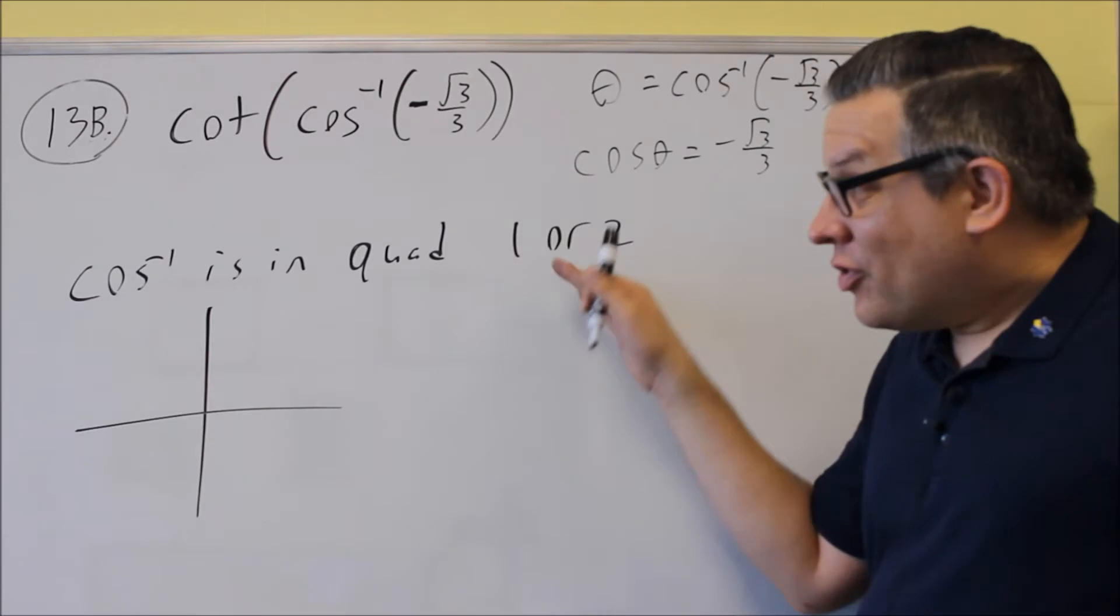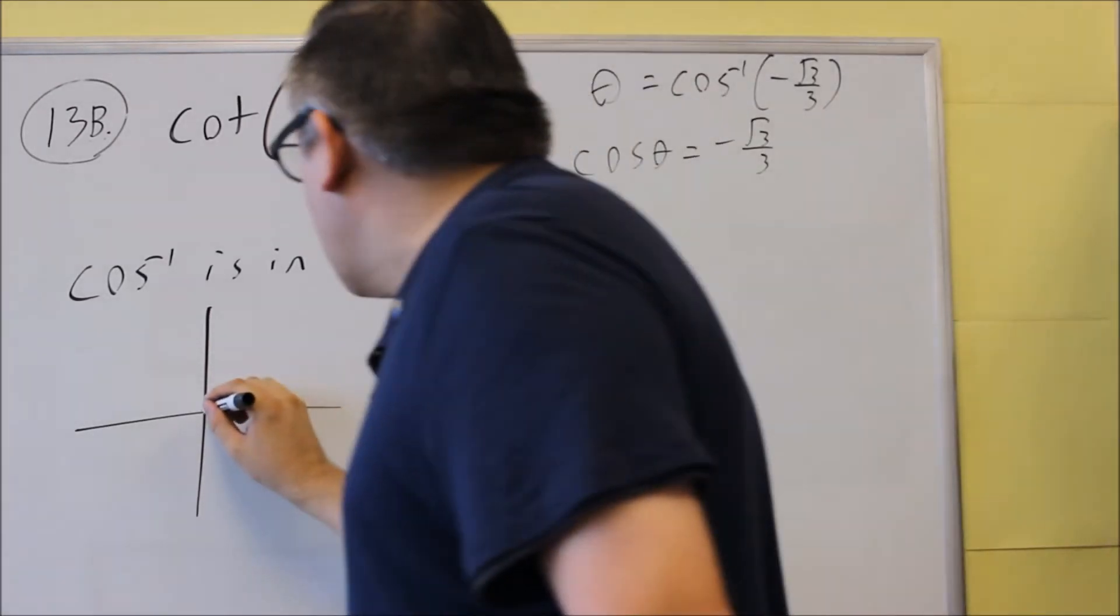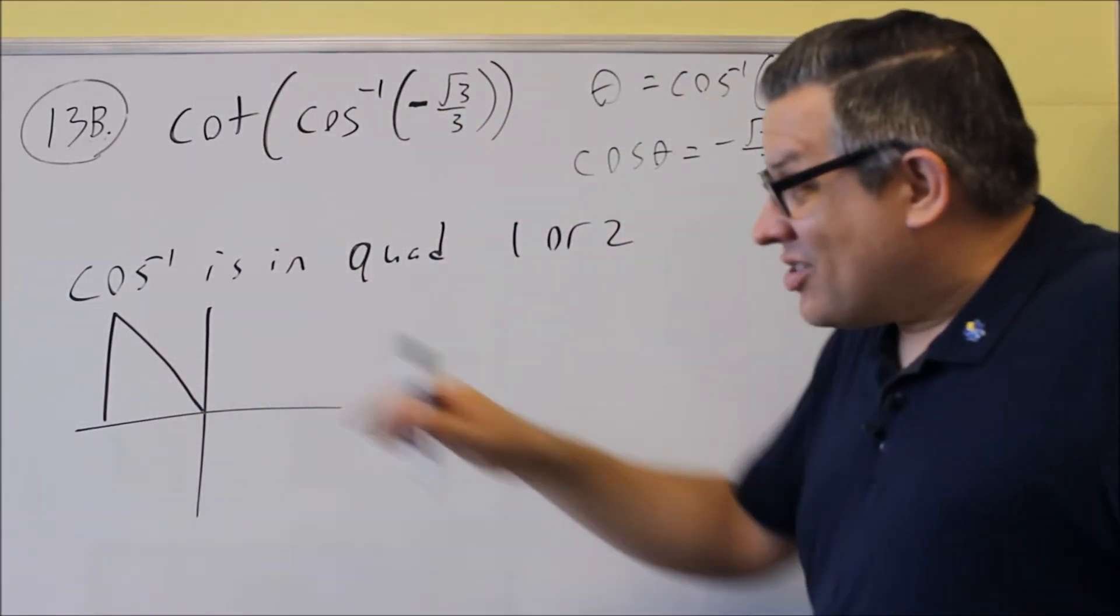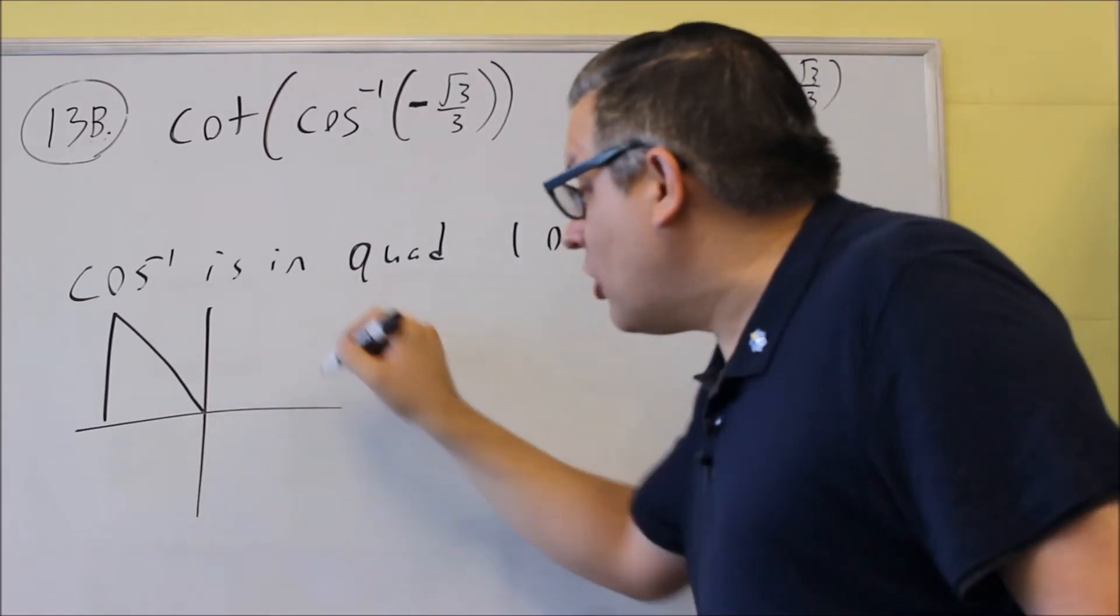Again, you have a choice with inverses to have it either in 1 or 2 only. Because it's in 1 or 2, we have a choice. It has to be in the second quadrant because that number inside was negative. If it was positive, I'd have it in the first quadrant.